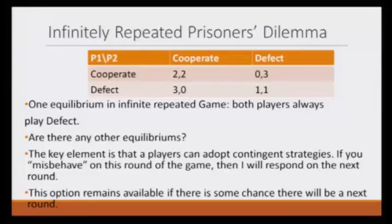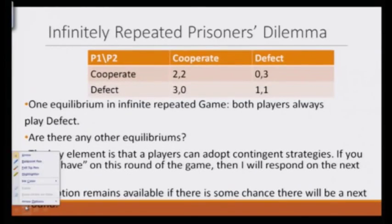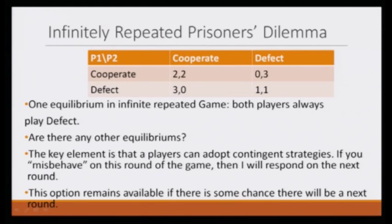Can we get any cooperation just because we are having this game repeated infinitely? We know that defection would sustain on its own in a finite number of repetitions, as well as in infinite repetitions it would sustain on its own, because in all stages it would lead to Nash equilibrium, and Nash equilibrium is self-enforceable. Coming back to the prisoner's dilemma game, one outcome is definitely that we will always get defect and defect. But is there any other equilibrium that we can get? The key element is that a player can adopt contingent strategies.